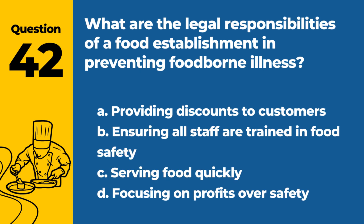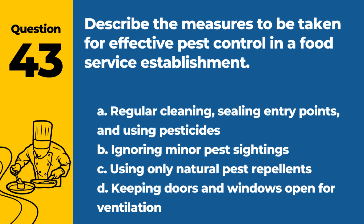Question 42. What are the legal responsibilities of a food establishment in preventing foodborne illness? A. Providing discounts to customers. B. Ensuring all staff are trained in food safety. C. Serving food quickly. D. Focusing on profits over safety. Answer: B. Ensuring all staff are trained in food safety. It is a legal responsibility of a food establishment to ensure that all staff are adequately trained in food safety to prevent foodborne illnesses.